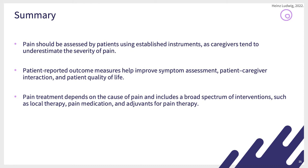Pain should be assessed by patients using instruments — for instance, the EORTC instrument or the pain scale. Patient-reported outcome measures are probably the way to go in the future and will be used more and more. Pain treatment depends on the cause of pain and includes a broad spectrum of interventions, such as local therapy, pain medication, adjuvants, and strong pain therapies like morphine. Thank you for your kind attention.